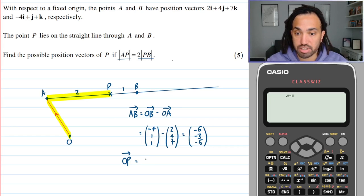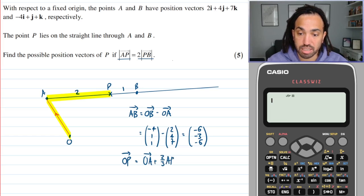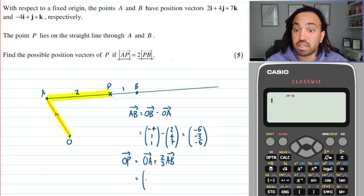So what I need to do here is O to A which is, let's just write it out, so O to A plus two thirds of A to B. Okay great. So that would be 2, 4, 7 plus two thirds of A to B which we said was minus 6, minus 3, minus 6. Okay great.